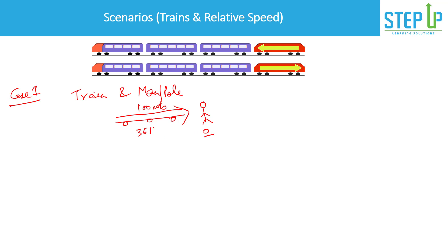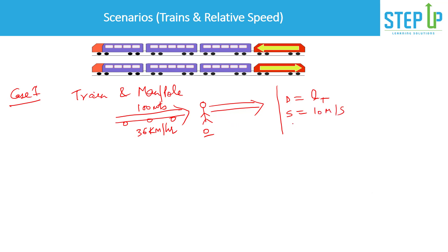If the train is 100 meters long, the person is stationary (speed is zero), and the train is running at 36 km/h, how long will the train take to pass this person? The train must cover a distance equal to its own length — the breadth of the person or pole is insignificant compared to the train's length. So distance = 100 m, speed = 36 km/h = 10 m/s, and you can calculate the time easily.